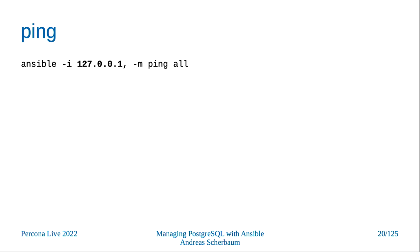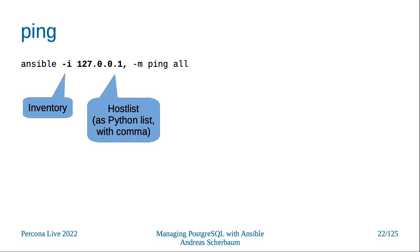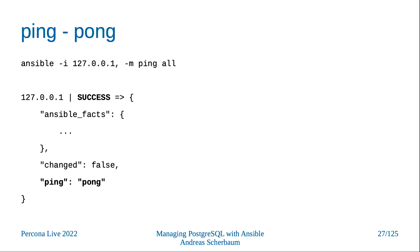You specify ansible on the command line, you have to specify an inventory — basically where this is supposed to run — then you pick the module with dash-m, the ping module, and then on which host. In the simplest case it's just 'all' hosts. Note: be careful with the comma here — this is a Python list, not just a single entry. Once you run it, you get some output. It tells you it did this, it checked what's on these servers, and you get a result back — ping-pong. It was able to log in, able to run Ansible on the remote host. This module did not change anything on your remote host.